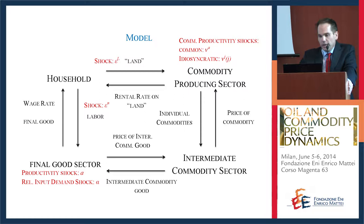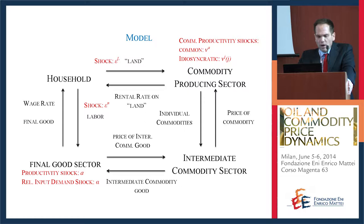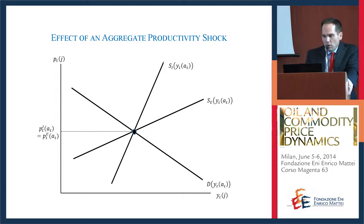In the model there are six shocks: a shock to labor supply, a shock to the supply of land, and productivity shocks to the production of individual commodities — one common and one specific to each commodity. To illustrate identification, I'll focus on the productivity shock — a standard TFP shock — and the relative input demand shock, which is a shock to the relative demand of commodities in the production of the final good.